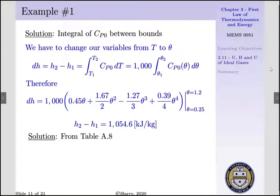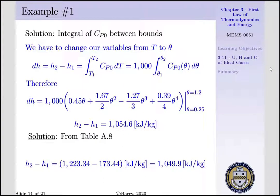Lastly, if we calculate our change of enthalpy from table A8, all we have to do is take our enthalpy value at 1200 Kelvin, less our enthalpy value at 250 Kelvin. And we'd have 1223.34 minus 173.44 kJ per kg. Or our change of enthalpy between state 2 and state 1 is equal to 1049.9 kJ per kg. This value is very close to what we calculated by evaluating our integral of CP0 between our bounds.